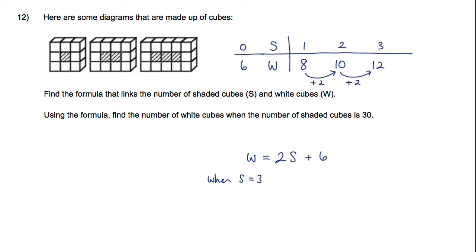So when S is equal to 30 what we'll get is that W is equal to 2 times 30 plus 6. So W is equal to that's 60 plus the 6 is 66. And of course we'd finish with the sentence that the number of white cubes is 66 when the number of shaded cubes is 30.